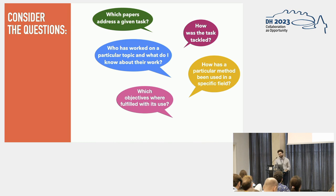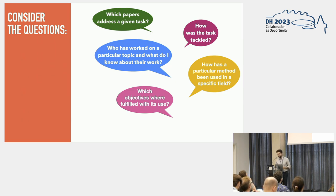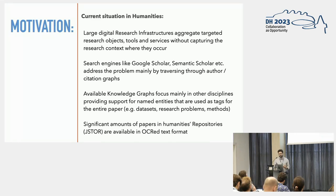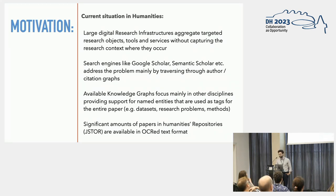Let's take a moment to consider the following questions. Say we're doing our research and we want to find out which papers address a given task, or how was the task being tackled, or who has worked on a particular topic and what do we know about their work, or how was a particular method been used in a specific field, which objects were fulfilled with its use. To answer such questions today, one can use large digital research infrastructures that aggregate research objects, tools and services — but they do so in a way that the actual research context, the way these things appear in research articles, is not captured and not associated.